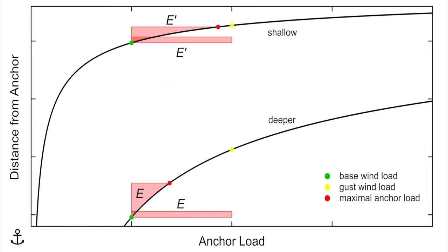In this diagram, we have plotted the boat's distance from the anchor. The upper curve is an example when anchoring in shallow water, whilst the lower curve is for anchoring in deeper water. The energy transferred from the gust to the boat is depicted as a pink square.